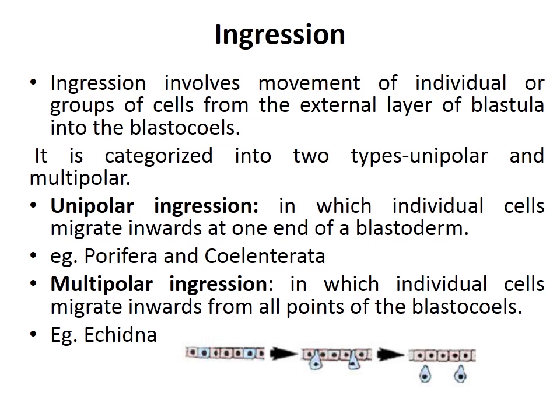Ingression involves movement of individual or groups of cells from the external layer of the blastula into the blastocoel. It is characterized into two types: unipolar ingression, in which individual cells migrate inwards at one point of the blastocoel, found in prolifer and cylinder; and multipolar ingression, in which individual cells migrate inwards from all points of the blastocoel, found in echidna.